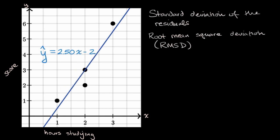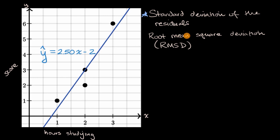One name is the standard deviation of the residuals. Another name is the root mean square deviation, sometimes abbreviated RMSD. Sometimes it's called root mean square error.